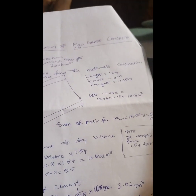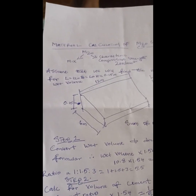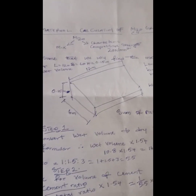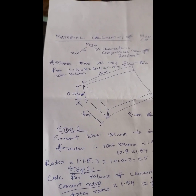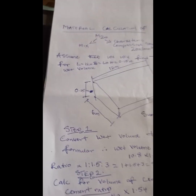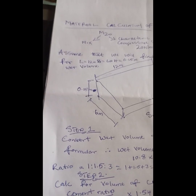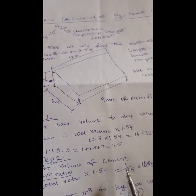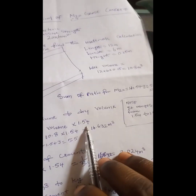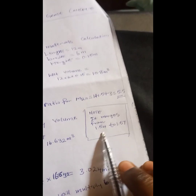In order to convert your wet volume to dry volume — because when you are doing your concrete mix, you are getting these materials in a dried state — you need to multiply by 1.54. This factor usually ranges from 1.54 to 1.57, and we are going to adopt 1.54.